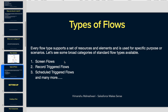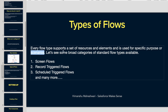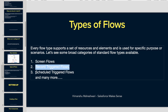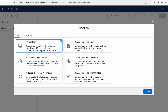Every flow type supports a set of resources and elements. These are available in each flow type, but there are some differences — though the majority is the same — and they are used for specific purposes or scenarios. Now let's look at the three broad categories of standard flow types: first is screen flows, second is record triggered flows, and third is schedule triggered flows.